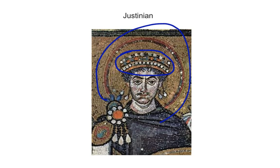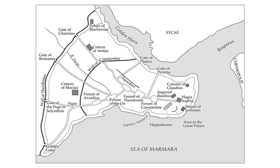We looked at Justinian's Code yesterday, so we know that he has this uniform law code and we don't need to go into too much depth there. One of the things he is going to do is build up Constantinople. He's going to deal with a number of issues — you'll see some of them in the video today, focusing on more of the bad things about him. One of those is a riot that breaks out in the Hippodrome, which you'll also see.